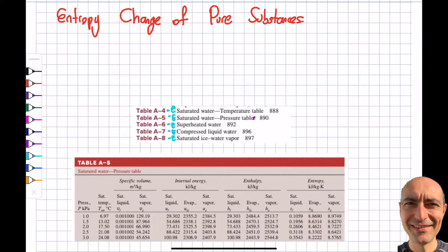Alright, let's talk about the entropy change of pure substances. I covered pure substances in module 3. There's nothing new happening here conceptually; we just didn't cover entropy back then, so now I'm adding it. Entropy is a property, just like internal energy, enthalpy, and specific volume. It's listed in the tables.